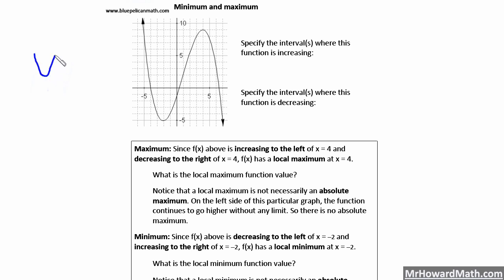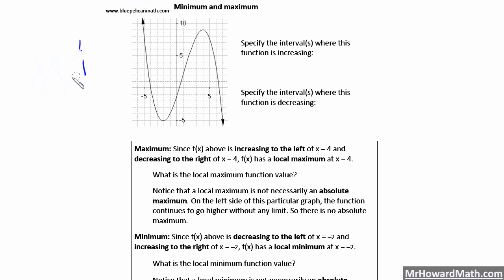If you recall, if you had a normal parabola that opens upward like this, you would have a minimum — an absolute minimum down here at the vertex. If you had a parabola that was flipped over, that opened downward like this, you would have an absolute maximum up at the top where the vertex was. But with pre-calculus, we need to get prepared for how we're going to talk about these values in pre-calculus and then on into calculus. We need some new vocabulary here.